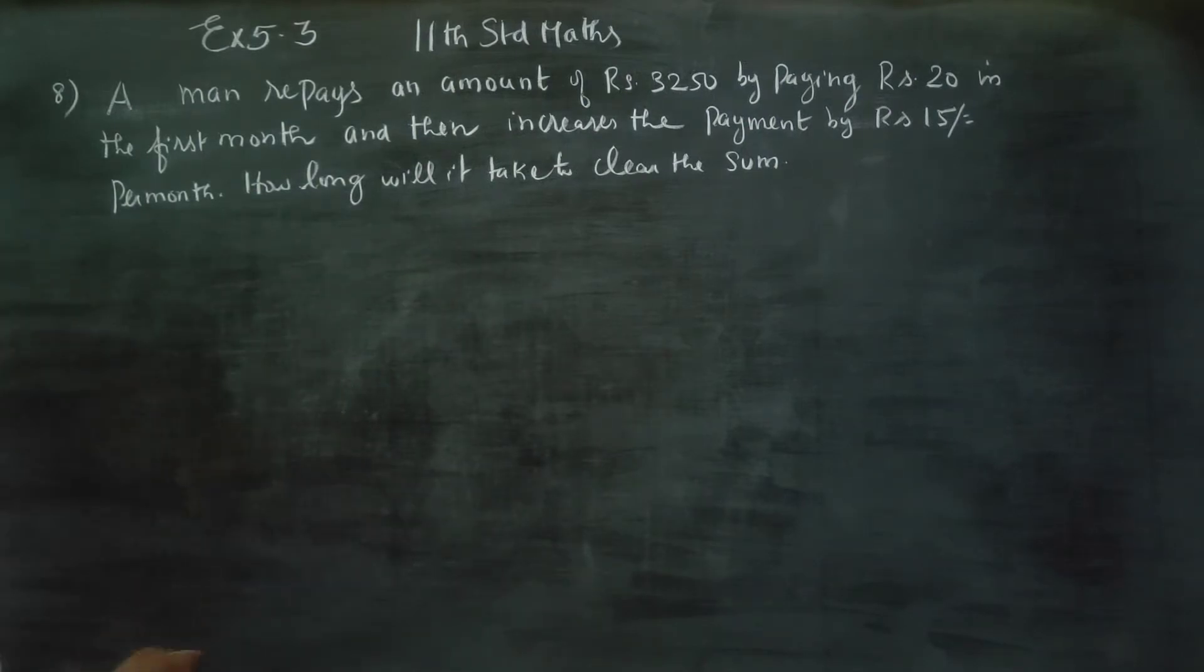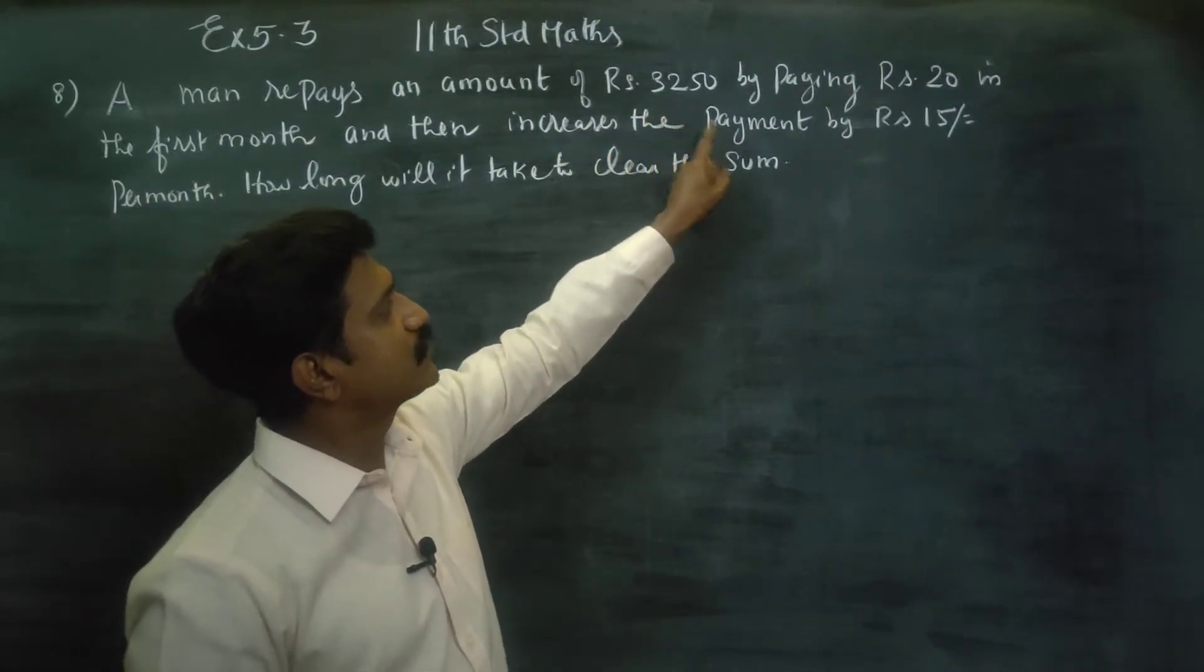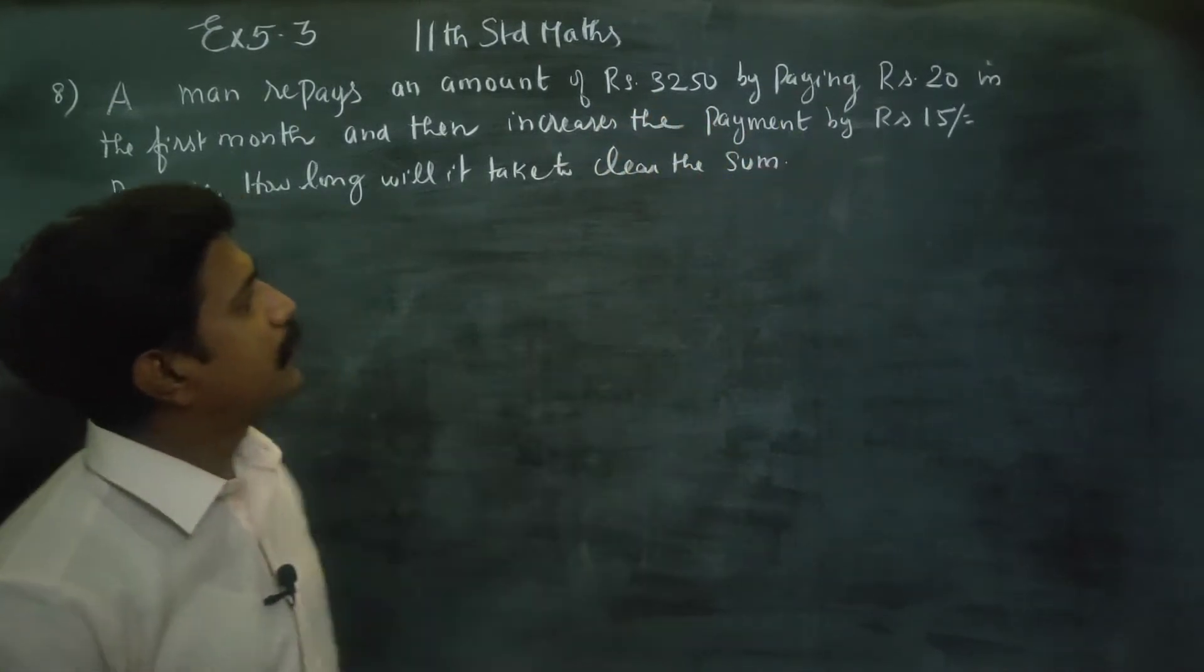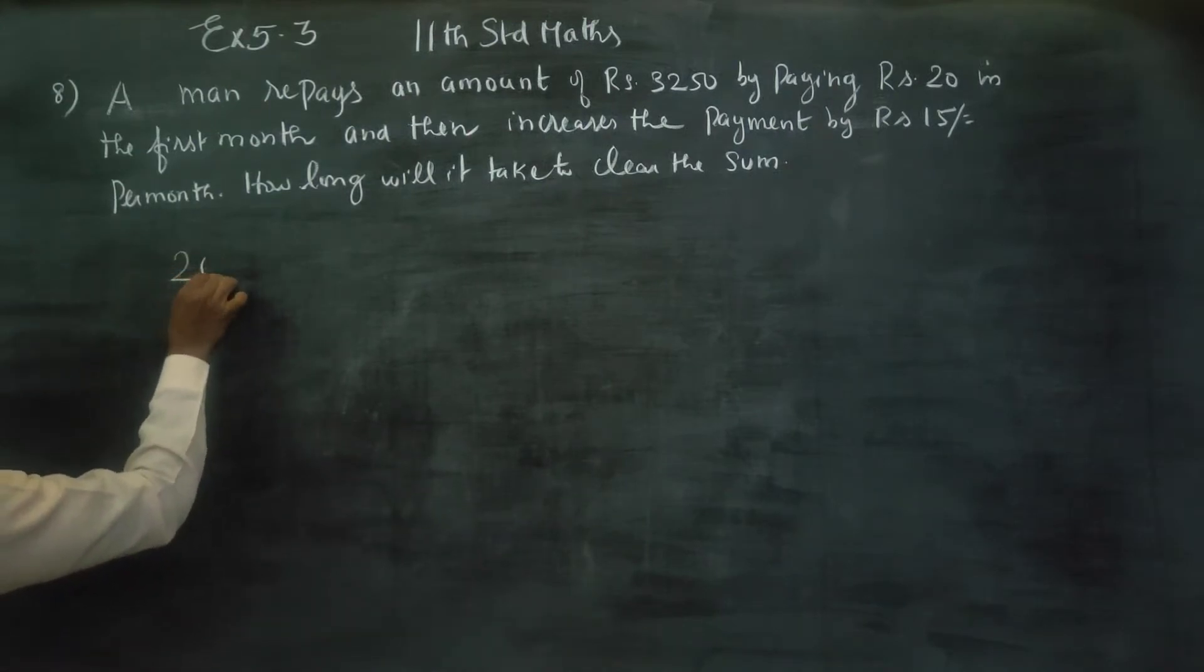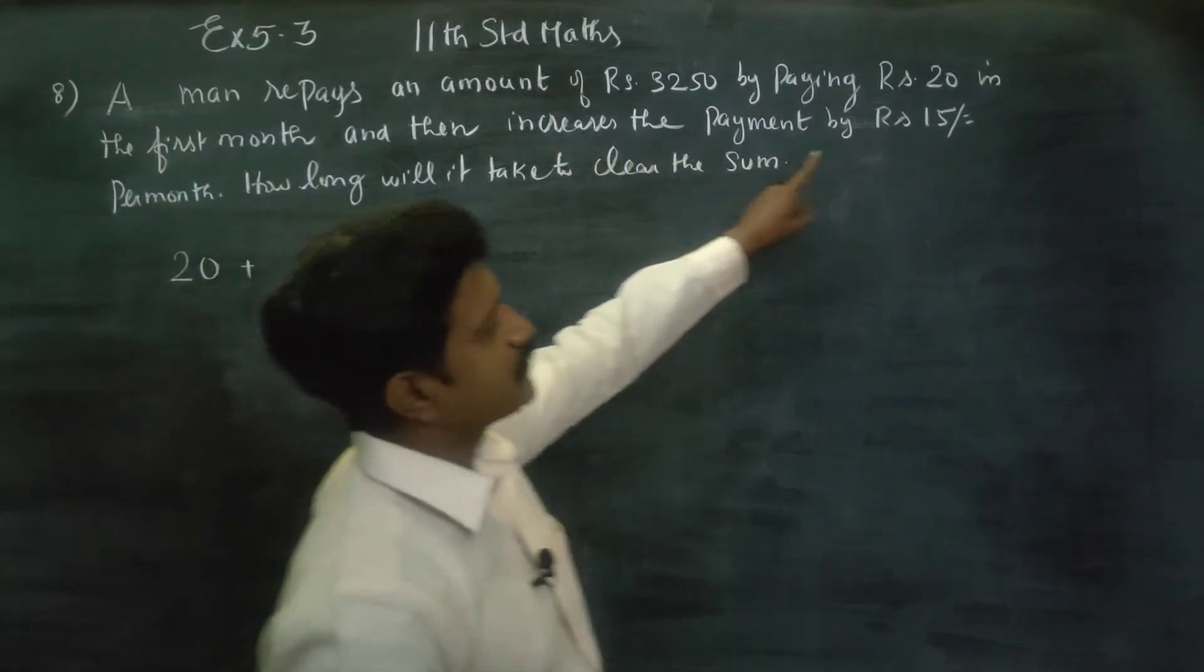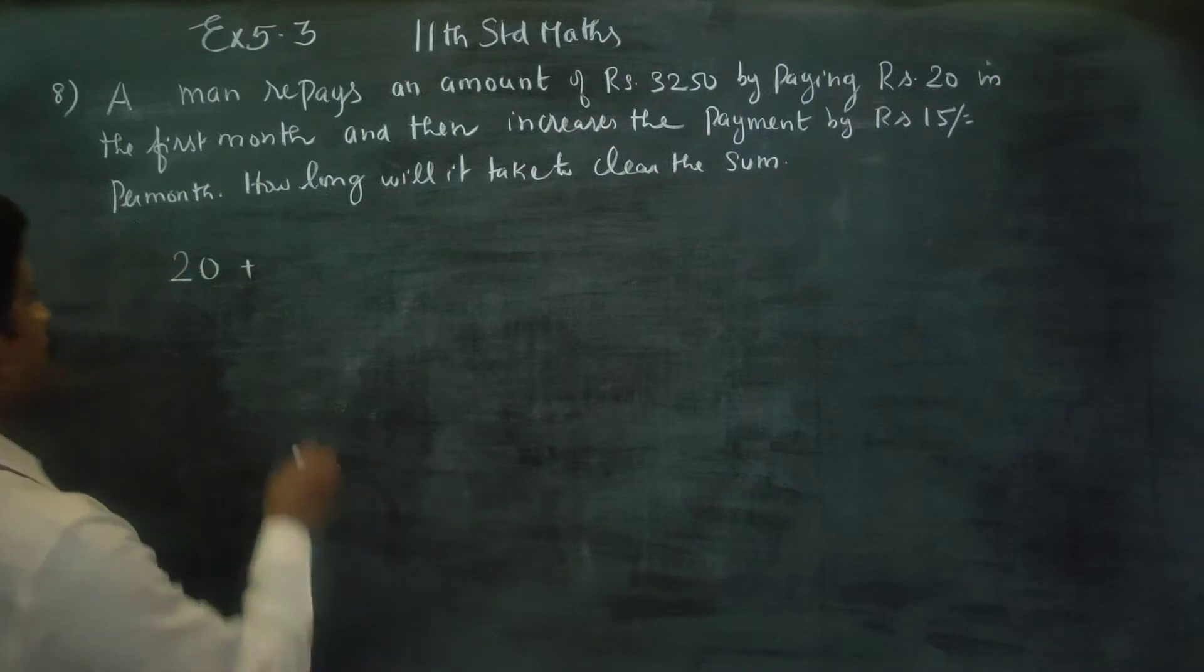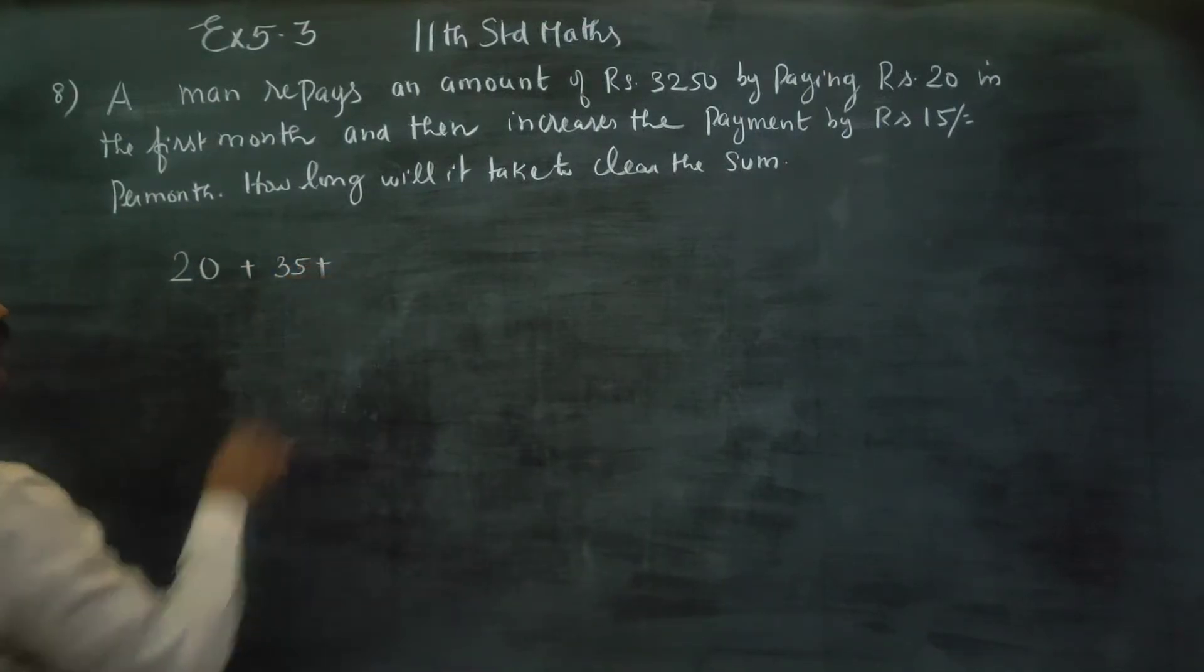How long will it take to clear the sum of rupees 3,250 by paying 20 rupees in the first month? In the first month, it will be 20 rupees. The second month increases the payment by 15, so if you add 15 per month, it will be 35 per month.